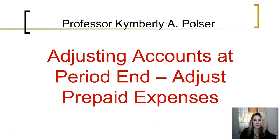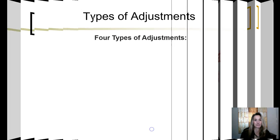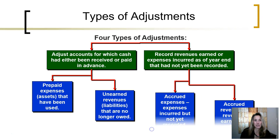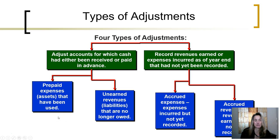This episode looks at one type of period-end adjustment: adjusting for prepaid expenses. Recall there are four types of adjustments that need to be made at the end of each accounting period. The first of those are prepaid expenses, or assets that have been used up during the period.